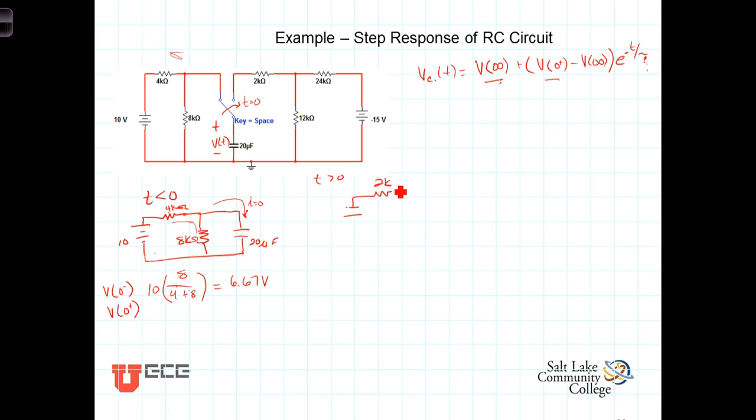There's a 2 kiloohm resistor. We have a 12 kiloohm resistor, 24 kiloohm resistor. And then this voltage source. That is minus 15 volts.